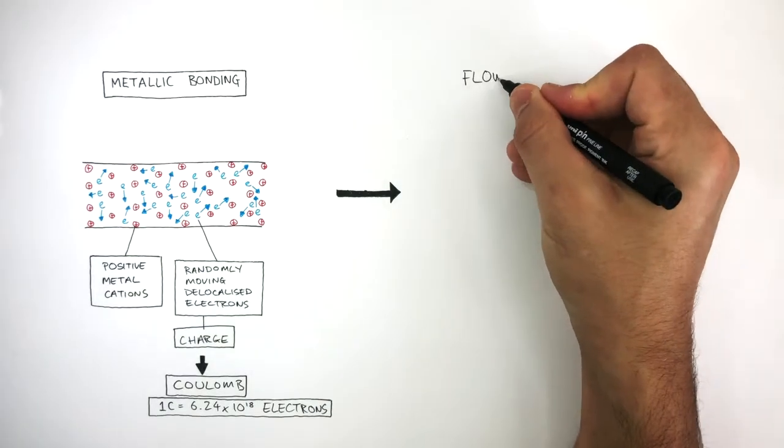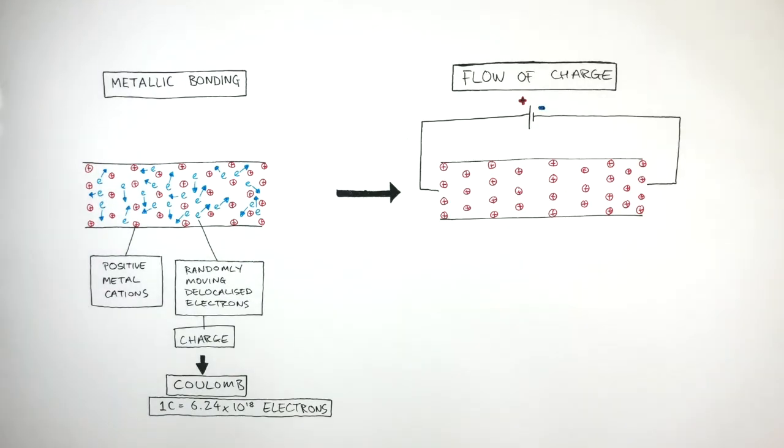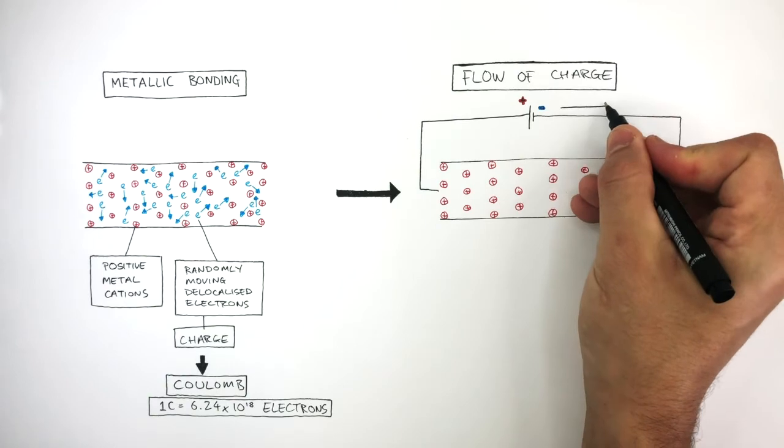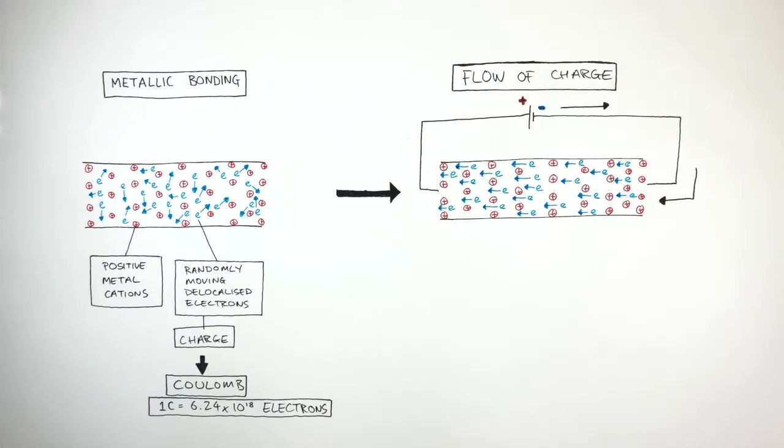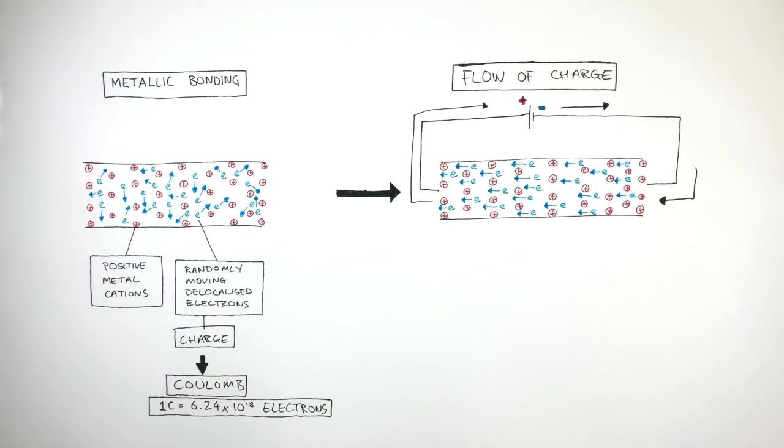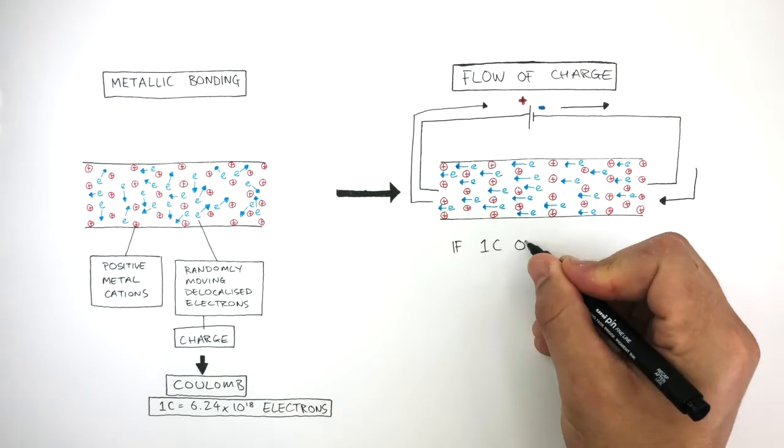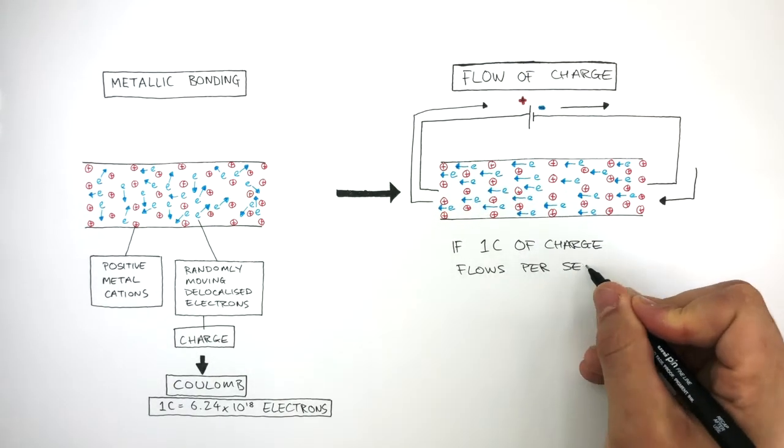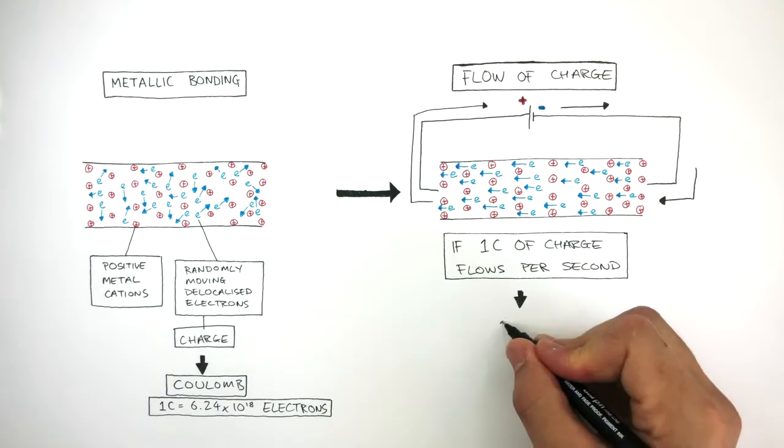For there to be a flow of charge, this same wire is connected to a cell. The cell pushes the electrons out of the negative terminal around the circuit where these electrons flow back to the positive terminal. So if one coulomb of charge flows per second, this equals 1 amp.